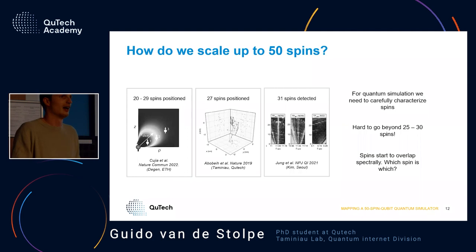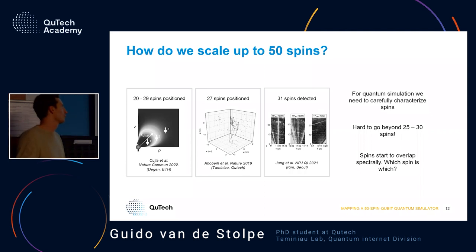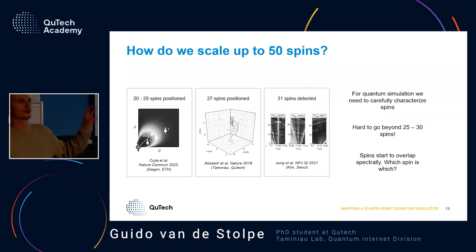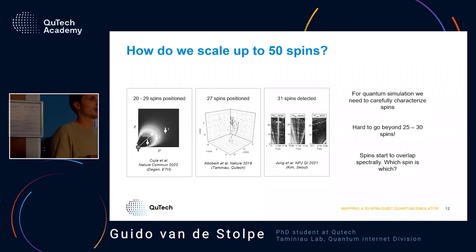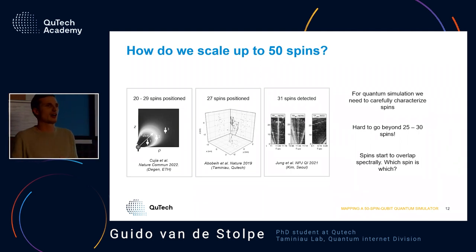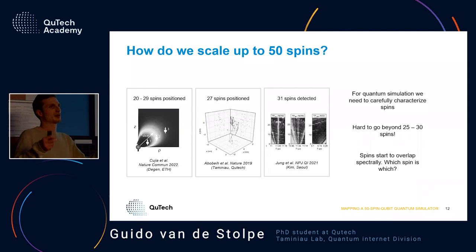It turns out getting to 50 spins is a bit more difficult. Looking at the literature, there are few groups who can push beyond the 20-spin limit. There's nice work from the Degen group positioning 20 to 29 spins, our group positioned 27 spins up to atomic resolution, and there's also a collaboration between us and a group in South Korea where they detected 30 spins with the help of machine learning. But all of these methods get stuck around 25 to 30 spins because it becomes harder to tell which spin is which.